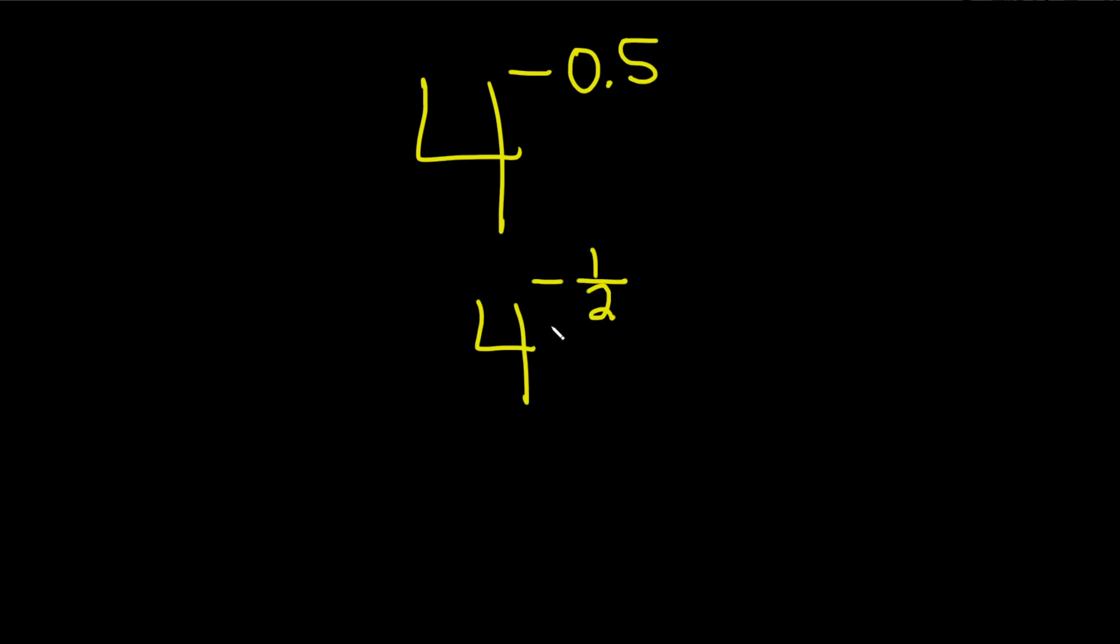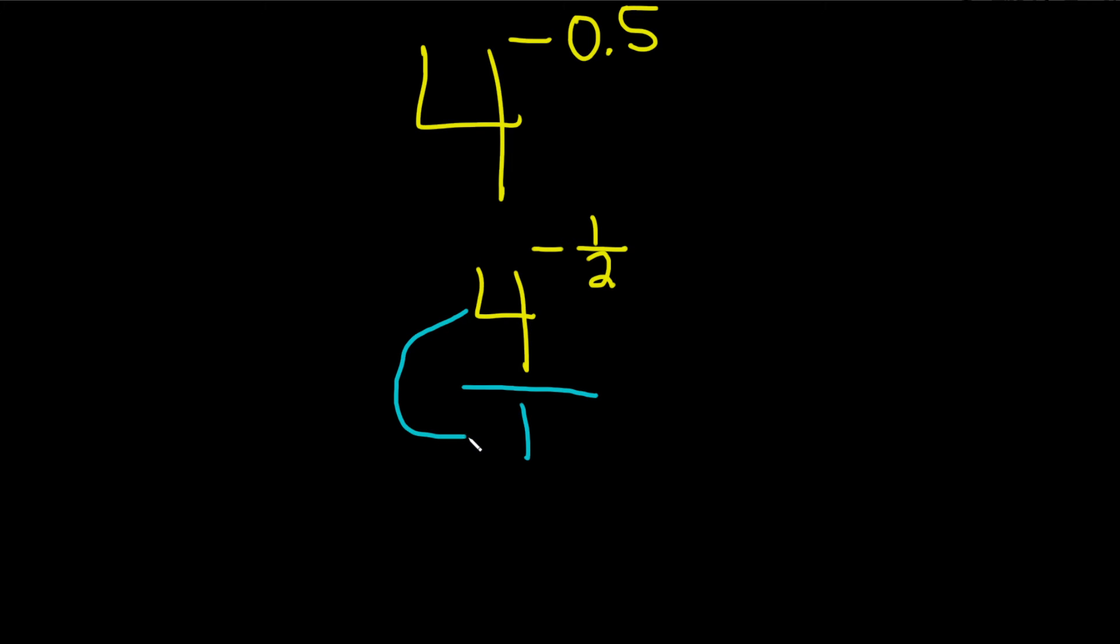Then we can get rid of the negative. So to do that, we have to remember that this number is divided by 1, really. It's implied. And so to change the sign of the exponent, what you do is you take this and you bring it down.